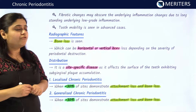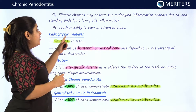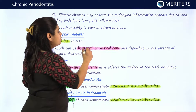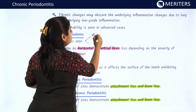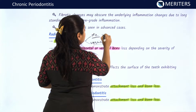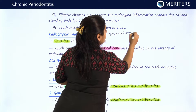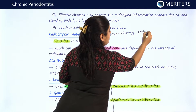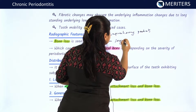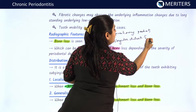Let us see the radiographic features of chronic periodontitis. The most important finding is bone loss. Bone loss has two patterns: horizontal bone loss and vertical bone loss. Horizontal bone loss is most frequently associated with supra-bony pockets, while vertical bone loss is associated with angular defects and infra-bony pockets.